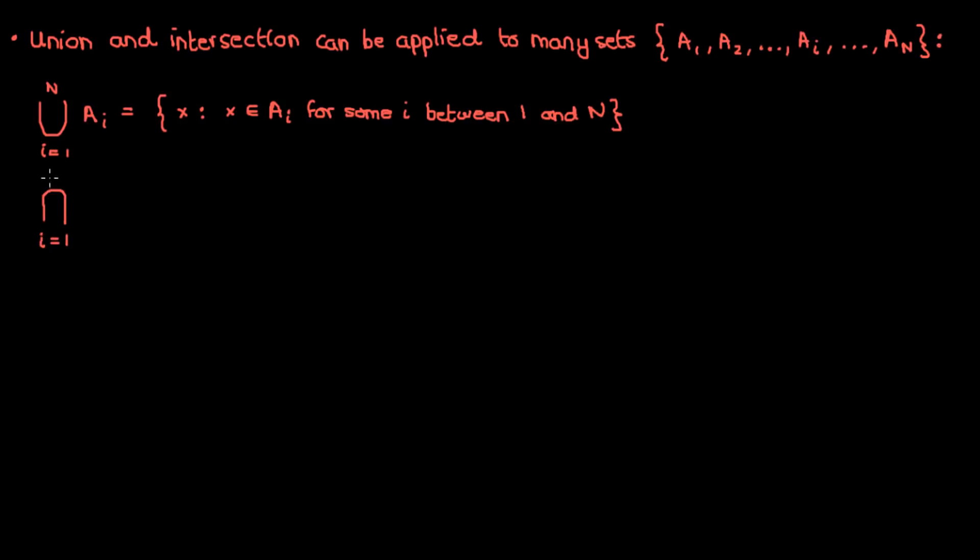On the other hand, the intersection of multiple sets, which is written like this, is the set of elements found in all of the sets A sub i. Keep in mind that you can also take the union or intersection of an infinite number of sets.